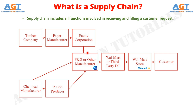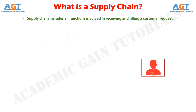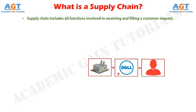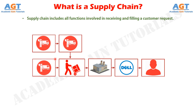In another example, when a customer makes a purchase online from Dell Computer, the supply chain includes, among others, the customer, Dell's website, the Dell assembly plant, and all of Dell's suppliers and their suppliers. The website provides the customer with information regarding pricing, product variety, and product availability. Having made a product choice, the customer enters the order information and pays for the product.